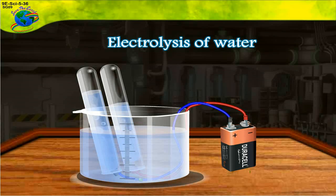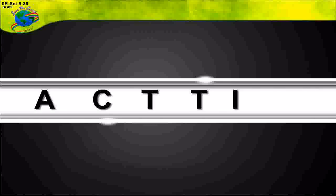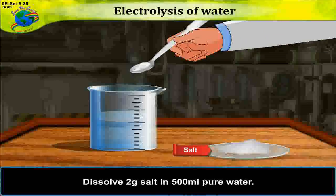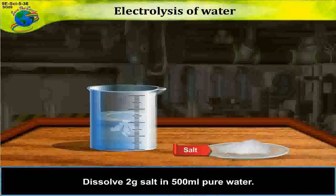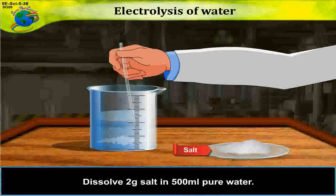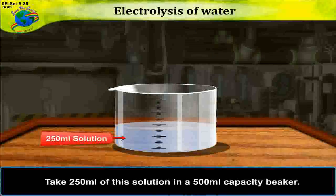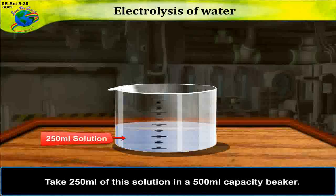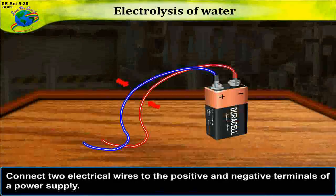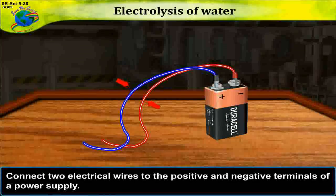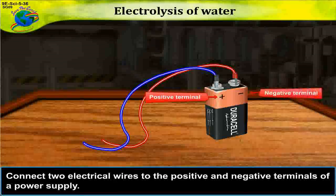Electrolysis of water - try this activity. Dissolve 2 grams of salt in 500 milliliters of pure water. Take 250 milliliters of this solution in a 500 milliliter capacity beaker. Connect two electrical wires to the positive and negative terminals of a power supply.